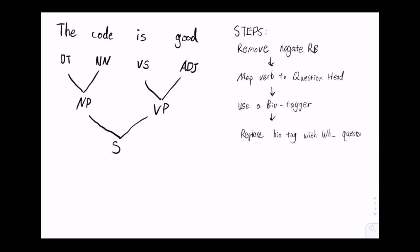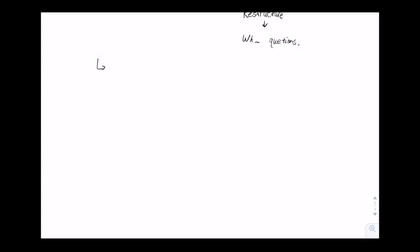Then we will restructure the sentence and post-process it so it's fluent and smooth. Consider the previous example, 'the code is good'. These steps will generate questions such as 'what is good' and 'what is code'.